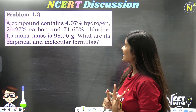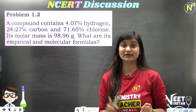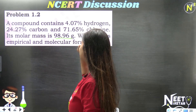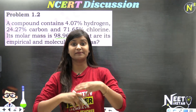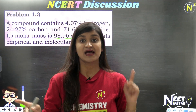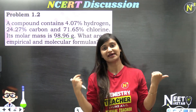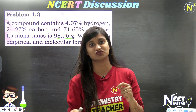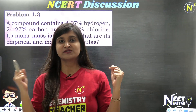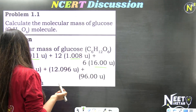A compound contains 4.07% hydrogen, 24.27% carbon, and 71.65% chlorine. Molar mass of this compound is given as 98.96 grams. We need to find its empirical formula and molecular formula. We have discussed this chapter and this concept in detail.